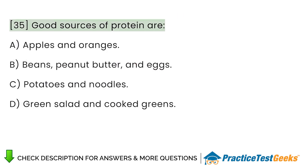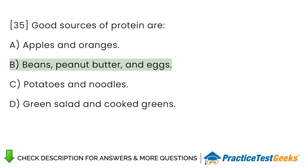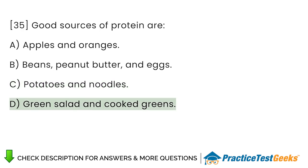Good sources of protein are: A. Apples and oranges. B. Beans, peanut butter, and eggs. C. Potatoes and noodles. D. Green salad and cooked greens.